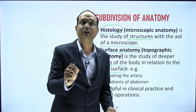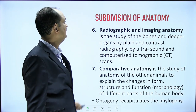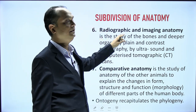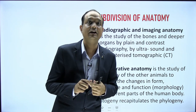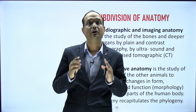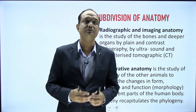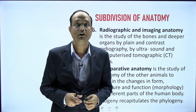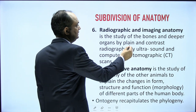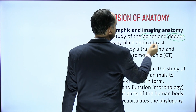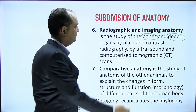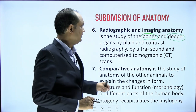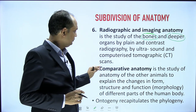Another way to study anatomy is with the help of radiology and imaging. When you use X-rays, CT scans, or MRI scans, you can read deeper structures and their relations. With X-rays, ultrasound, CT scans, and MRI, you can study the bones and deeper parts of the body — this is called radiological anatomy.